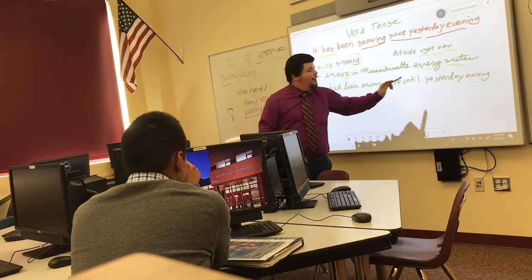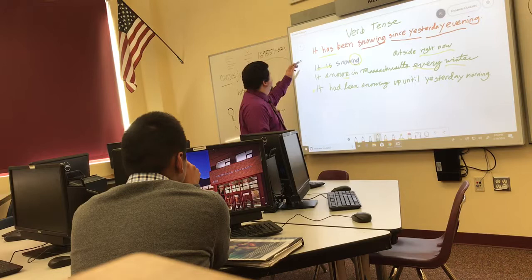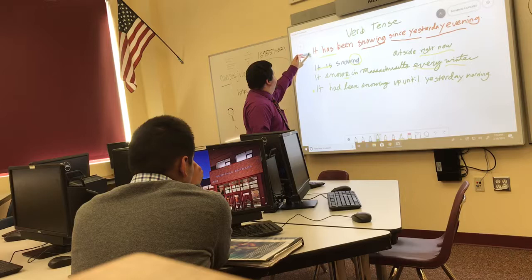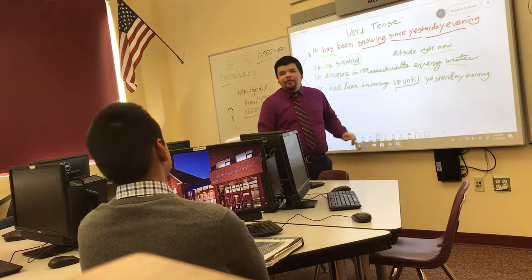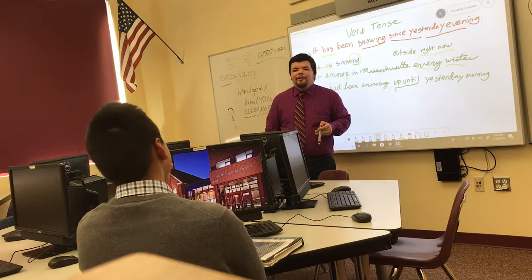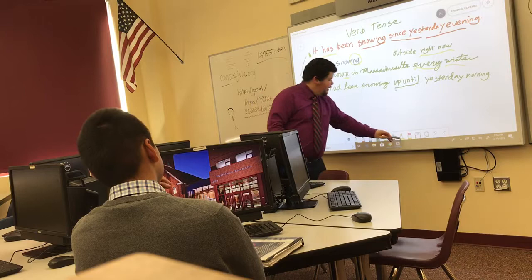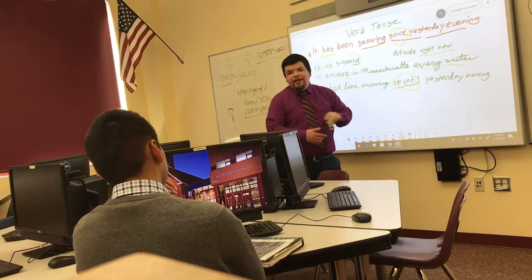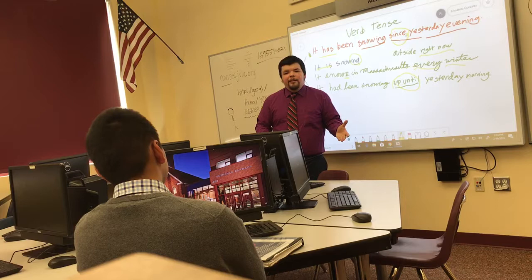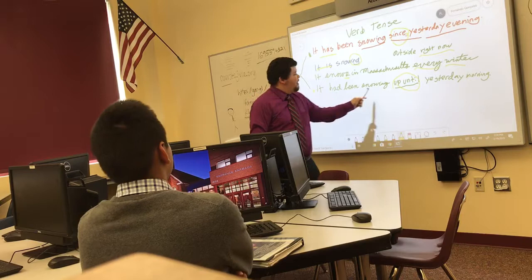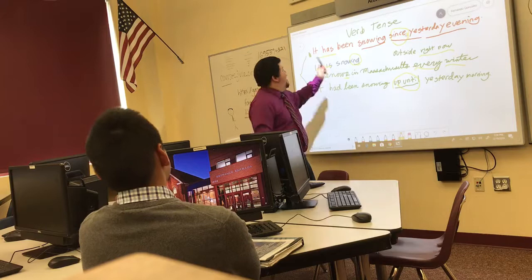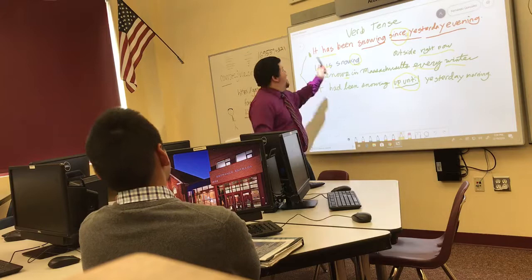What if we said 'it had been snowing up until yesterday'? How does that differ from 'it has been snowing since yesterday evening'? The key phrases to look for are 'up until' versus 'since.' 'Up until yesterday morning' means it was snowing and then it stopped. 'It had been snowing up until yesterday morning, and then nothing.' But 'it has been snowing since yesterday evening' means it's continuing — it hasn't stopped, we don't know if it stopped.